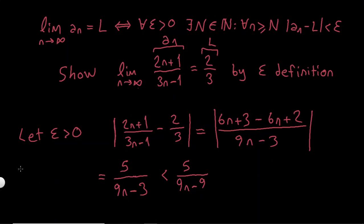Here what I did was I said 9n-9 is less than 9n-3. So if I write both sides 1 over that thing, it will be the reverse. And I can say this is equal to 5 over 9 times (n-1).